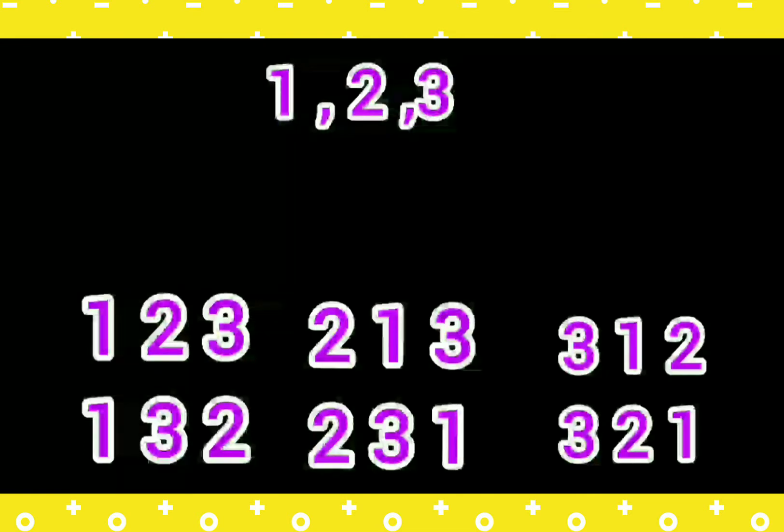If there are three different numbers, then counting combinations is nothing but possible combinations of numbers made up from this 1, 2, 3 number. So just consider for example there are three numbers like 1, 2, 3. Then how many possible numbers or how many possible combinations we can make out of these three numbers.